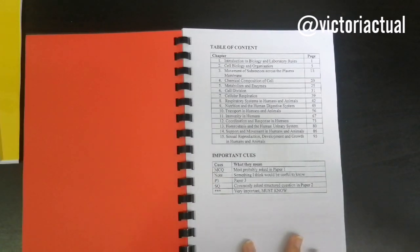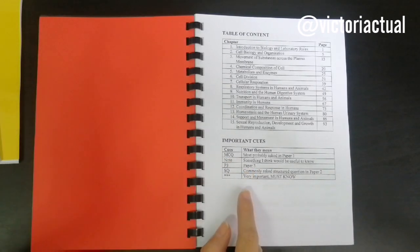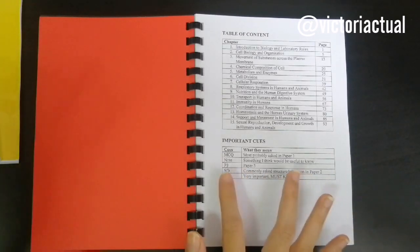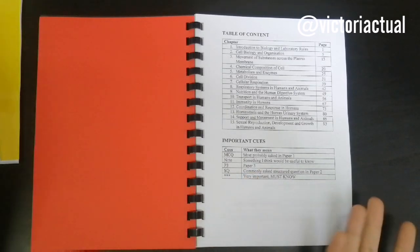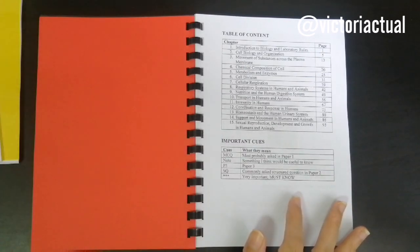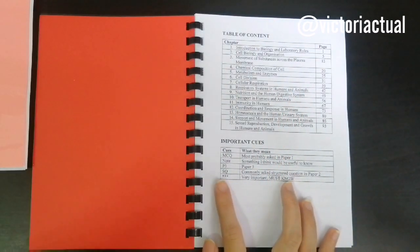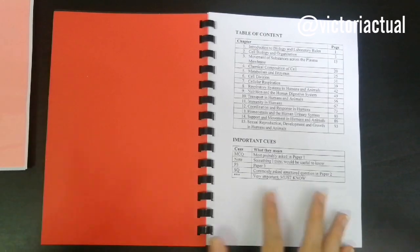This is the Table of Contents, from form 4, that's 15 chapters. Here you can see a few cues that I've included. We have MCQ, which means those questions will most probably be asked for MCQ. Note is just something I think would be useful to know or how I memorize stuff. For paper 3, it's like clues to answer paper 3. And SQ is for structured questions in paper 2, because essay is separate in another book. When I put 3 stars, it means it's super important and you have to memorize that.